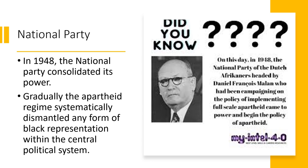On May 26, the National Party won the general elections after its initial victory in 1948. The National Party consolidated its power, creating new parliamentary seats for representatives of white voters in South Africa and in Southwest Africa — six in the House of Assembly and four in the Senate — elected to support the government. Gradually, the apartheid regime systematically dismantled any forms of black representation within the central political system.